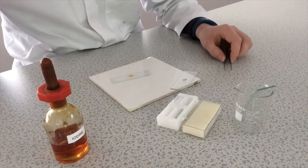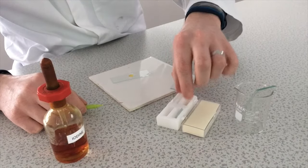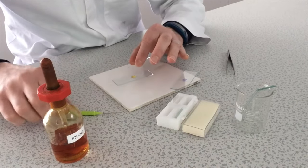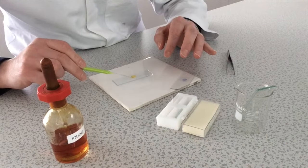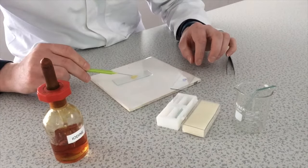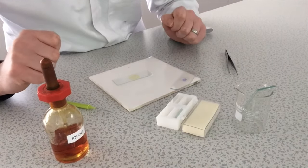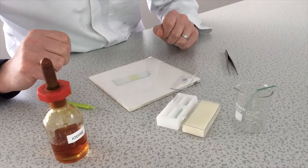And now using a mounted needle again I'm going to carefully add the cover slip nice and slowly to avoid any air bubbles. Perfect. And now my plant cell, onion cell slide is also ready for viewing underneath the microscope.